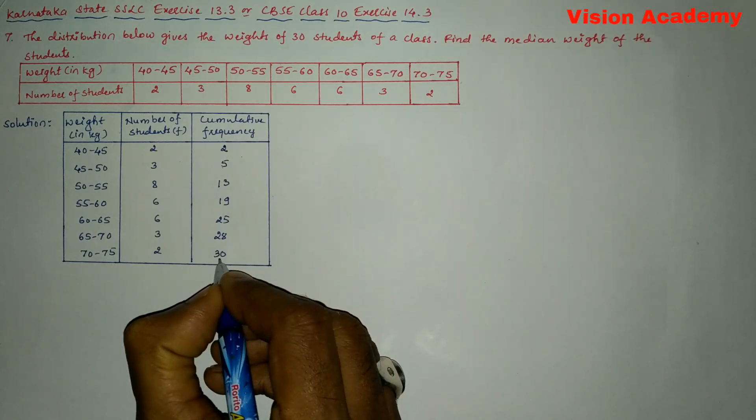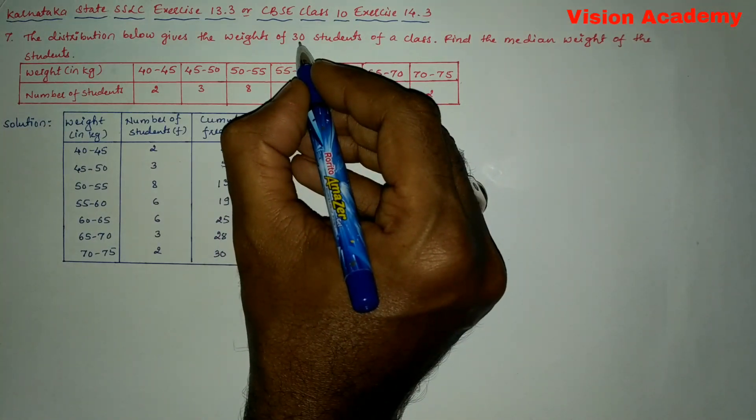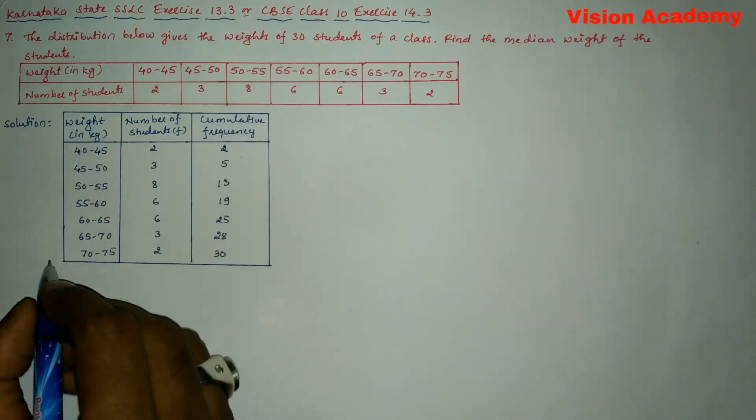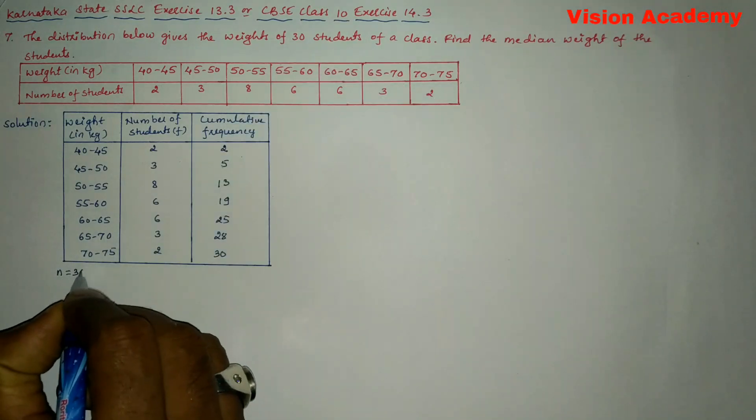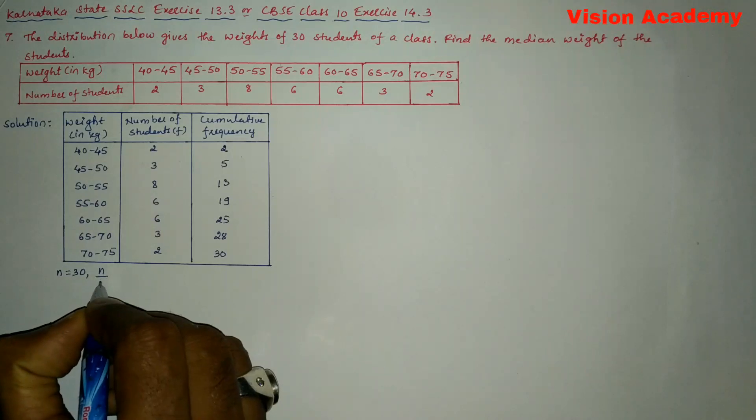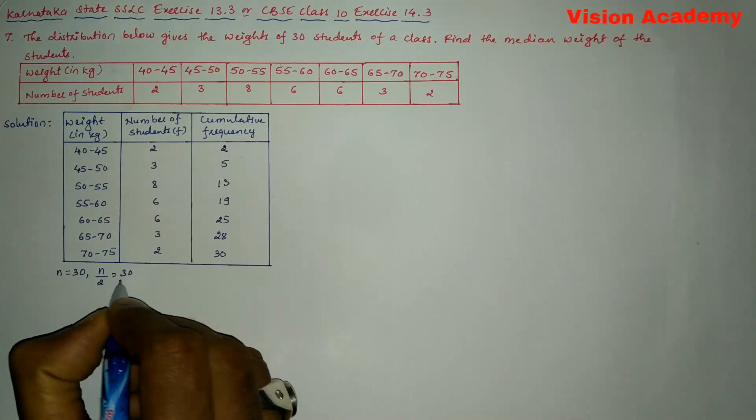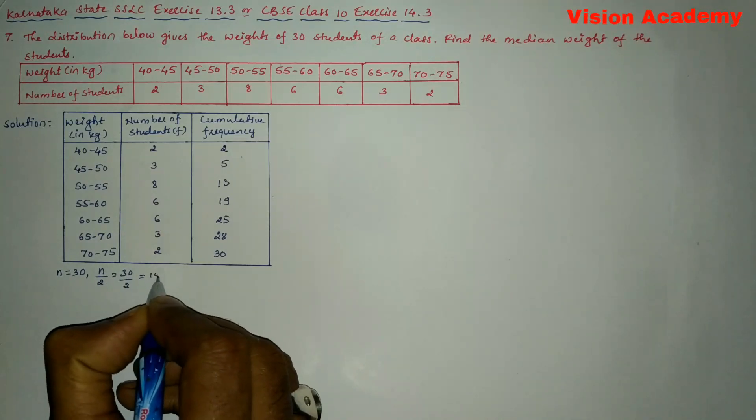So this cumulative frequency is matching with the total number of students, that is 30. So here we will take n equals 30 and we can write n by 2 equals 30 divided by 2 which equals 15.